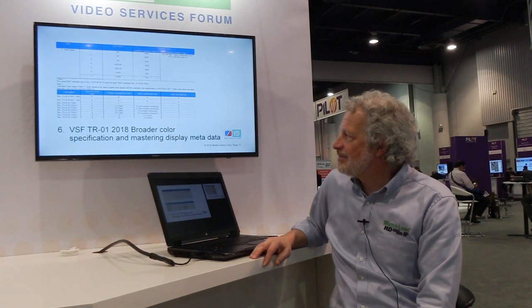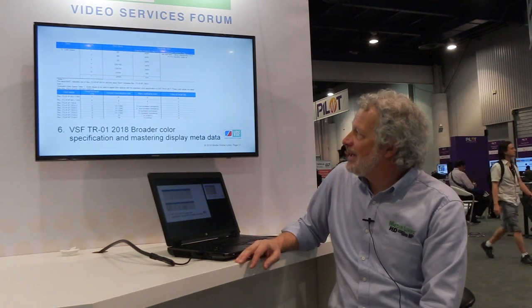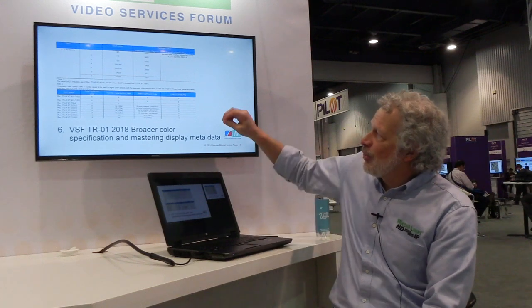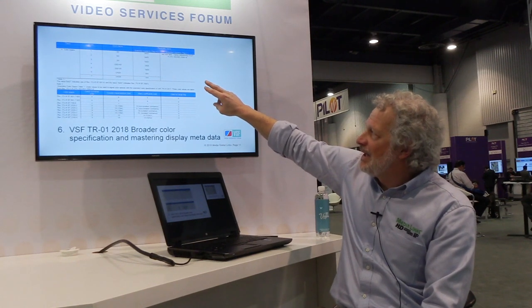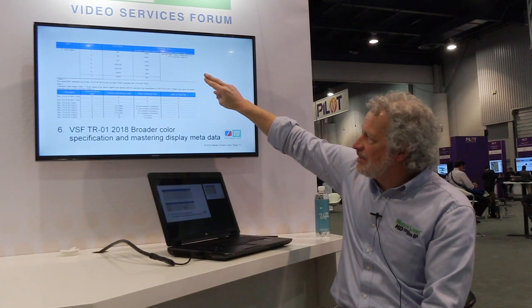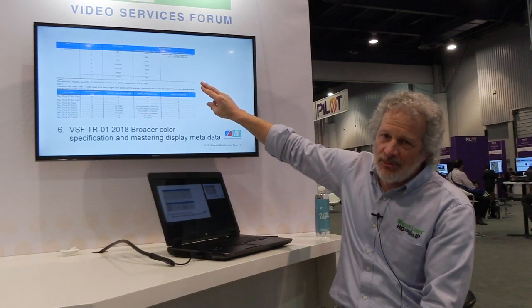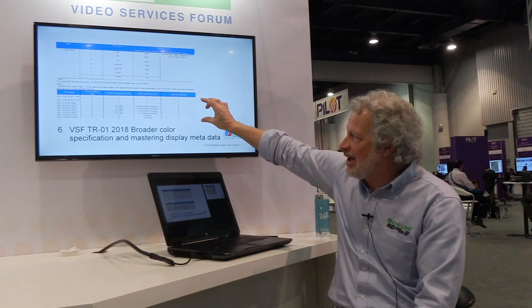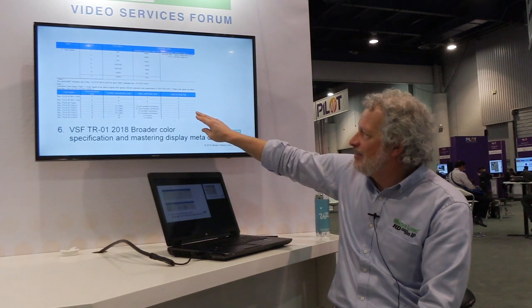It's also a broader color specification so that we can handle high dynamic range. There are tables in the recommendation — the top of the chart shows the TR-01 2013 recommendation and the values for those. If we set the extended capability flag to one, we move to the second chart, where we provide a transfer characteristics code, a matrix coefficient code, a video full-range flag, and a color primaries code, indicating how that particular material was prepared.